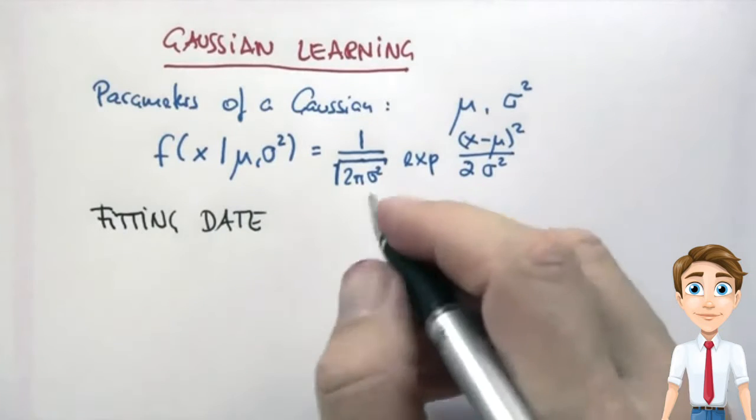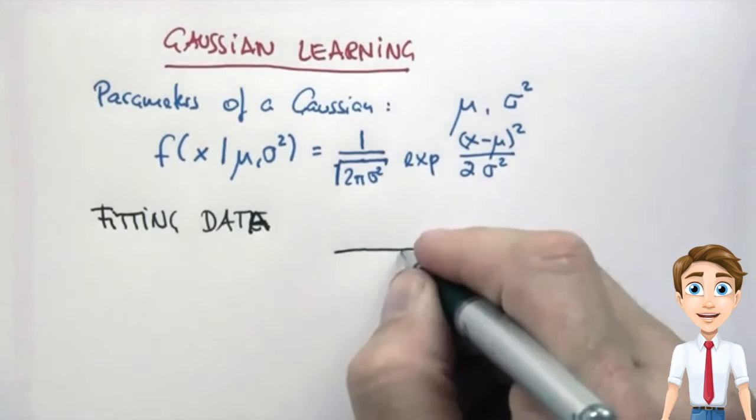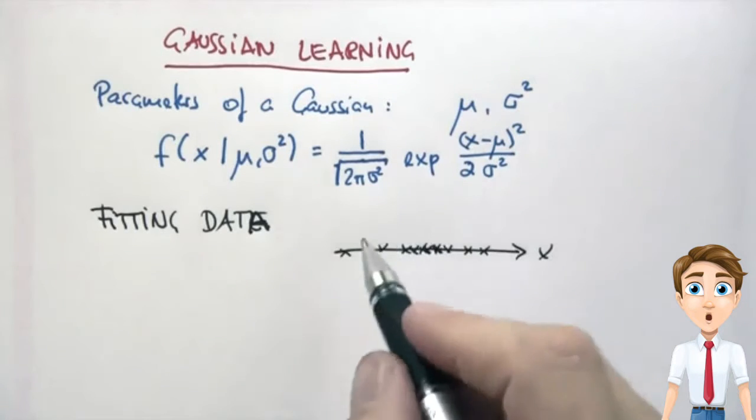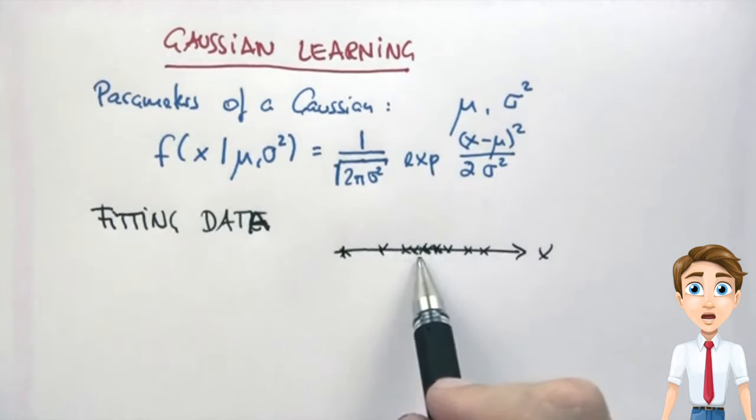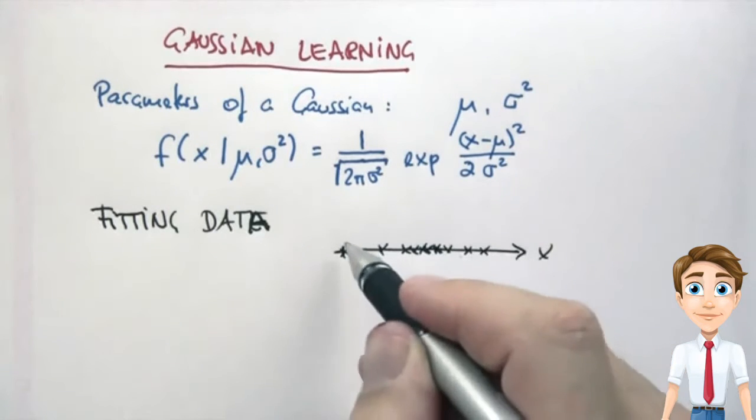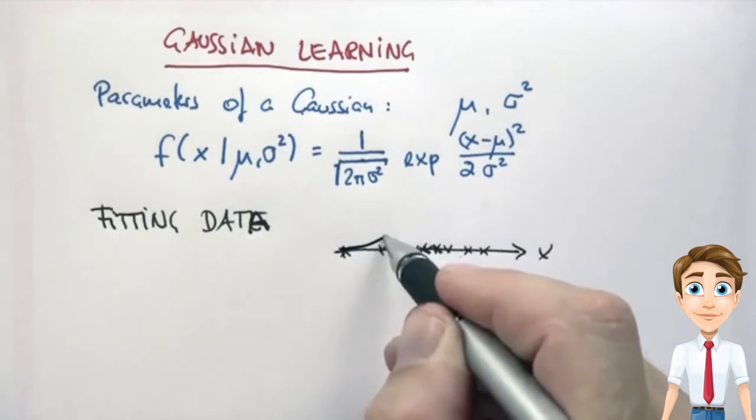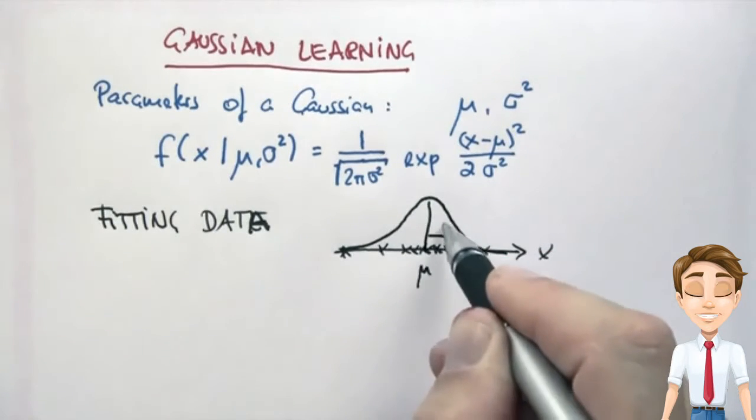So suppose you want to fit data, and our data is one-dimensional, and it looks as follows. Just looking at this diagram makes me believe that there's a high density of data points over here, and a fading density of data points over there. So maybe the most likely Gaussian will look a little bit like this, where this is mu, and this is sigma.